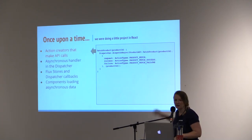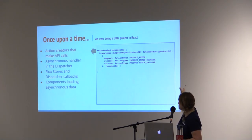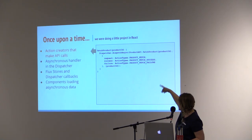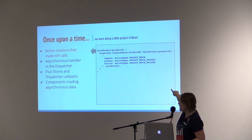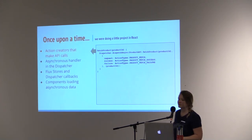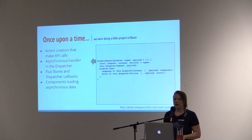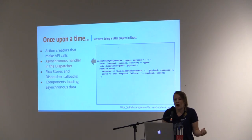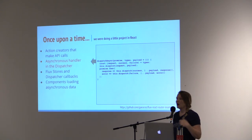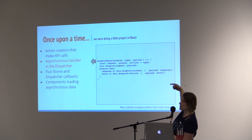I did commit the cardinal sin of putting code on my slides, so hopefully you guys can read that. You see here we have an action creator that fetches a product by the product ID, and then on success or failure it will emit the corresponding success or failure action, along with the original product ID payload. We used Dan's example of an asynchronous handler in the dispatcher that would handle the promise, then dispatch either the success or failure action with the corresponding response or error, along with that original payload. This was our async dispatch handler in the application's dispatcher.